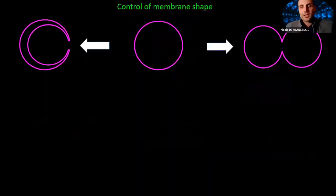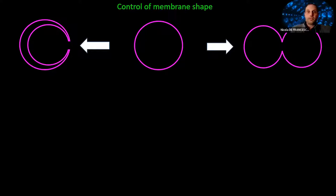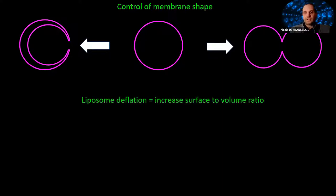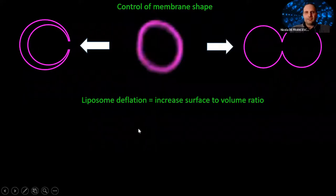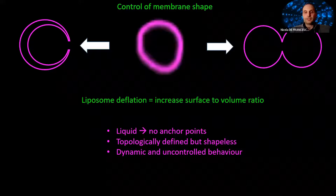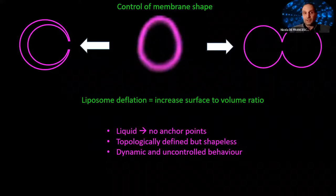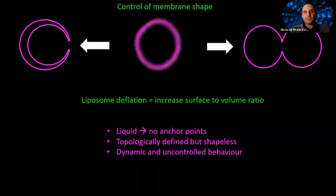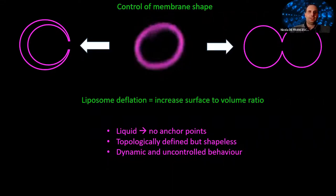Spherical liposomes can be produced easily in the lab, but how do we generate dumbbell or stomatocyte shapes starting from them? First, we need to lower membrane tension, because a membrane under tension is basically impossible to deform. We simply raise the osmotic pressure outside the liposome, causing deflation and increasing the surface-to-volume ratio. However, this is still very difficult to control because the membrane is a liquid with no anchor point. It is topologically defined — we have an inside and outside — but otherwise it is pretty shapeless, and its behavior can be affected by tiny changes in the surrounding environment.